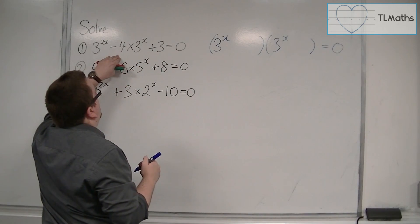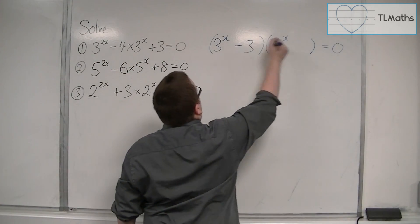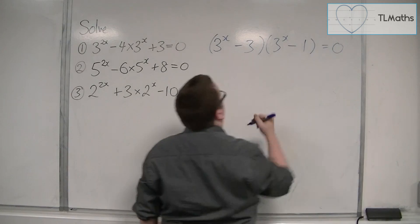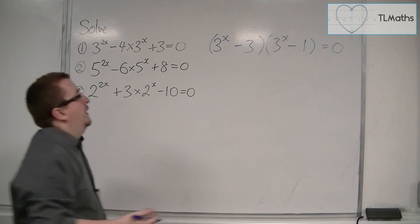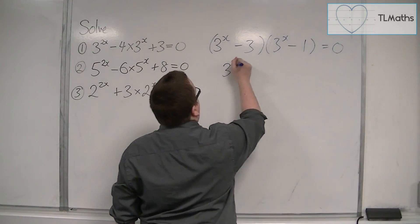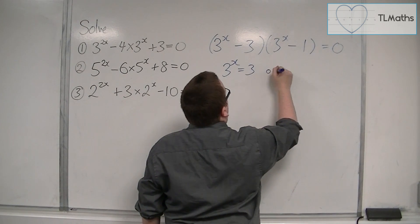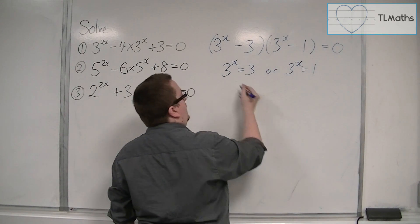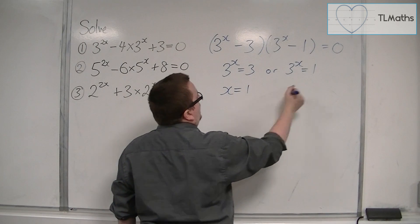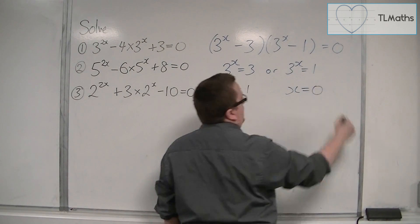We've got a plus 3 and a minus 4, so we're going to have a minus 3 and a minus 1. So then we have 3 to the x must be equal to 3 or 3 to the x must be equal to 1. And so either x is 1 or x must be 0.